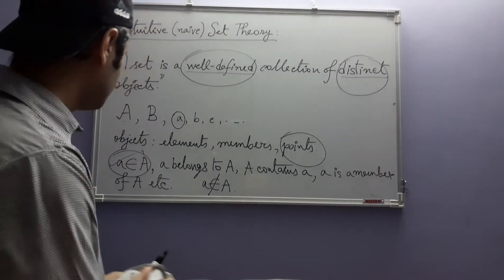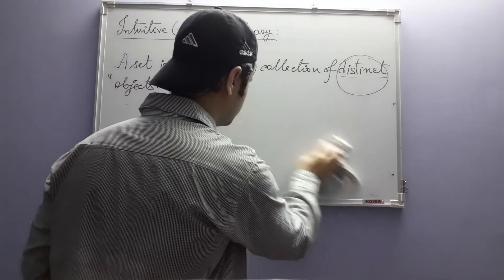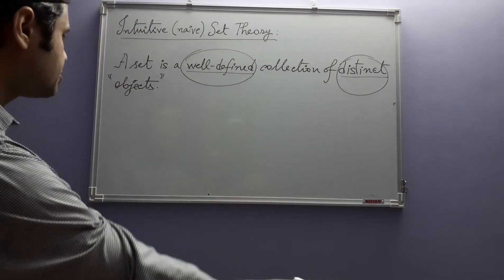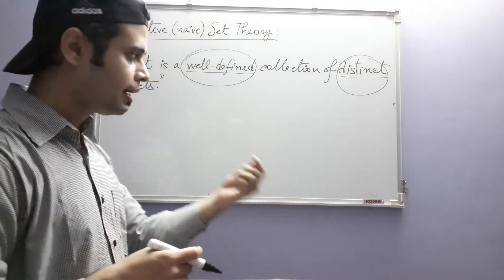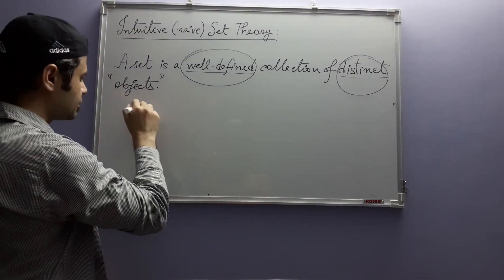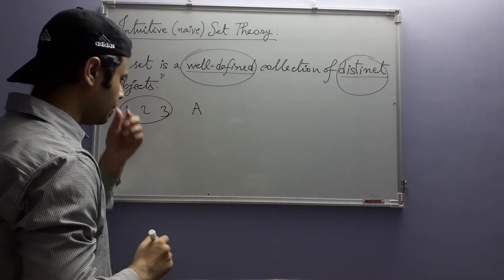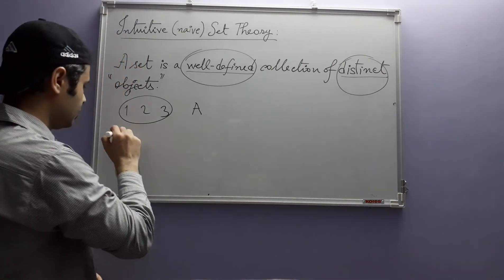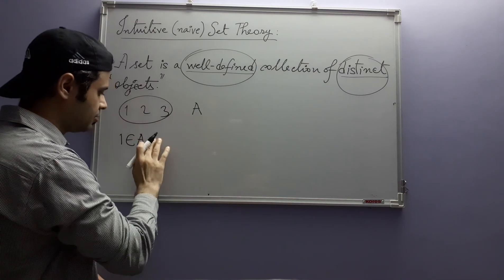Having set up the notation, we now simplify some things a little bit. Strictly speaking, if we want to say that a set contains this element and that element, we have to keep writing membership statements. For example, the set consisting of elements 1, 2, and 3 — if I am denoting that set by A — then to denote the fact that these are the elements in A, I may write 1 ∈ A, and so on.